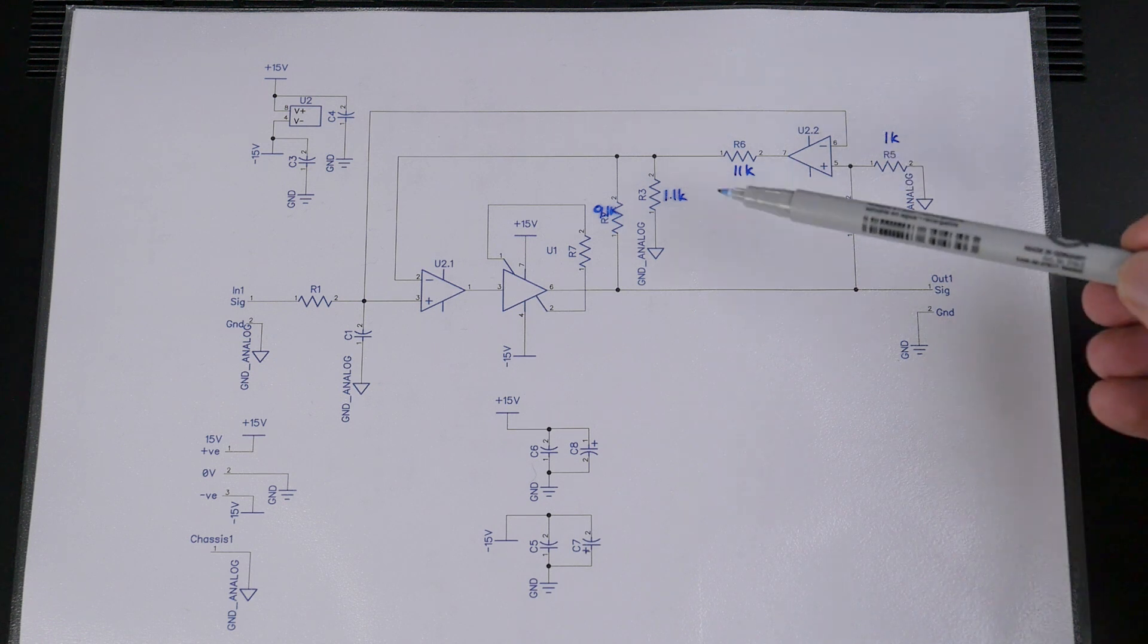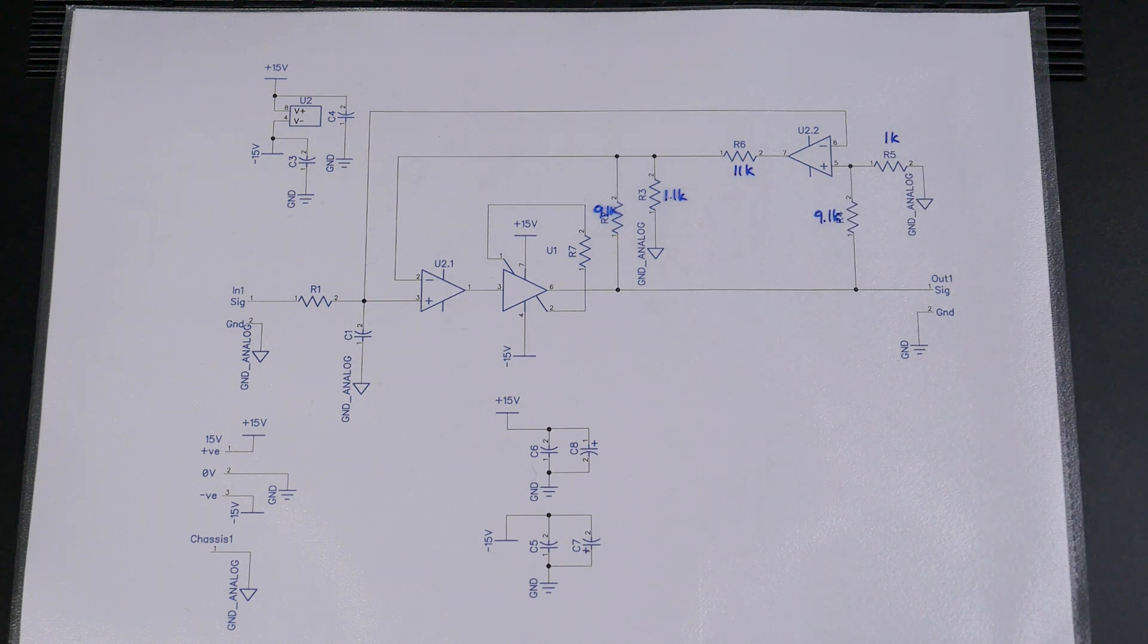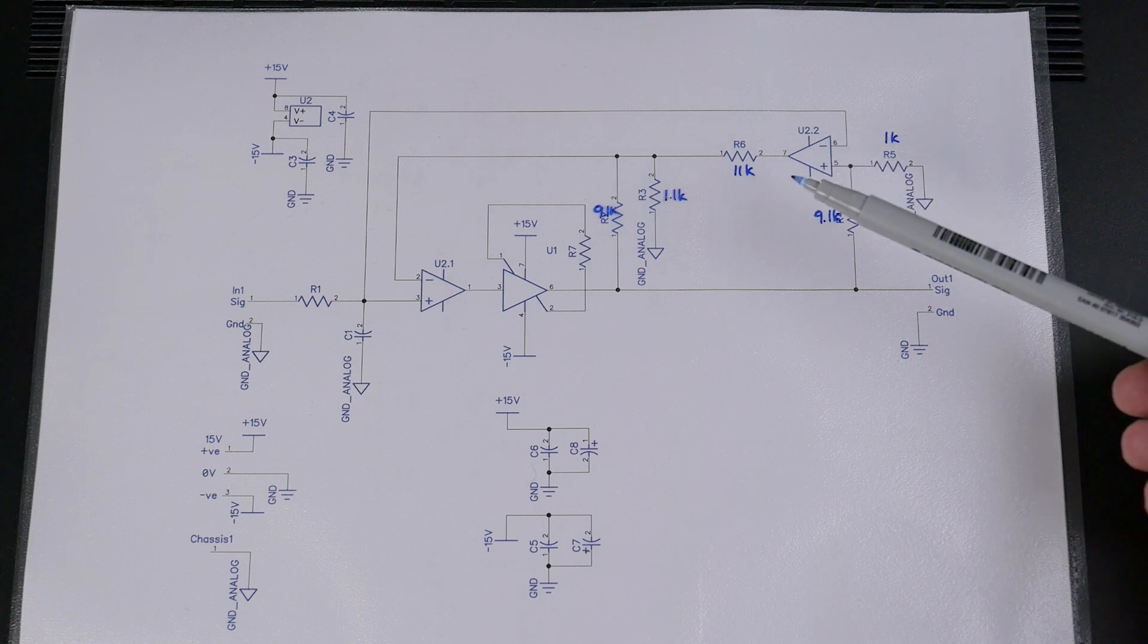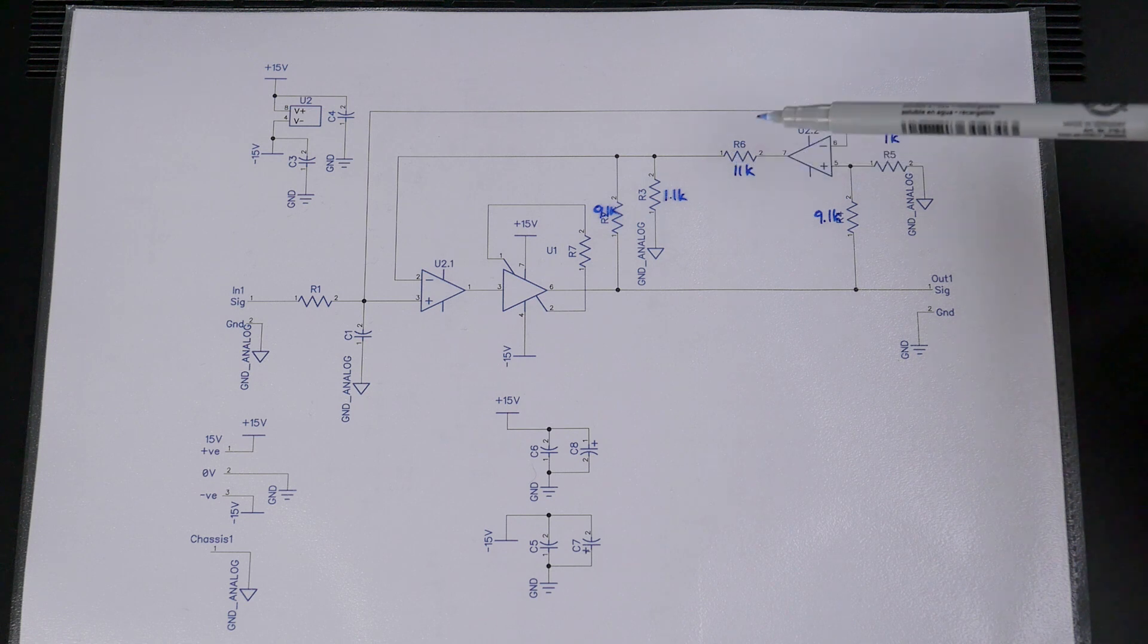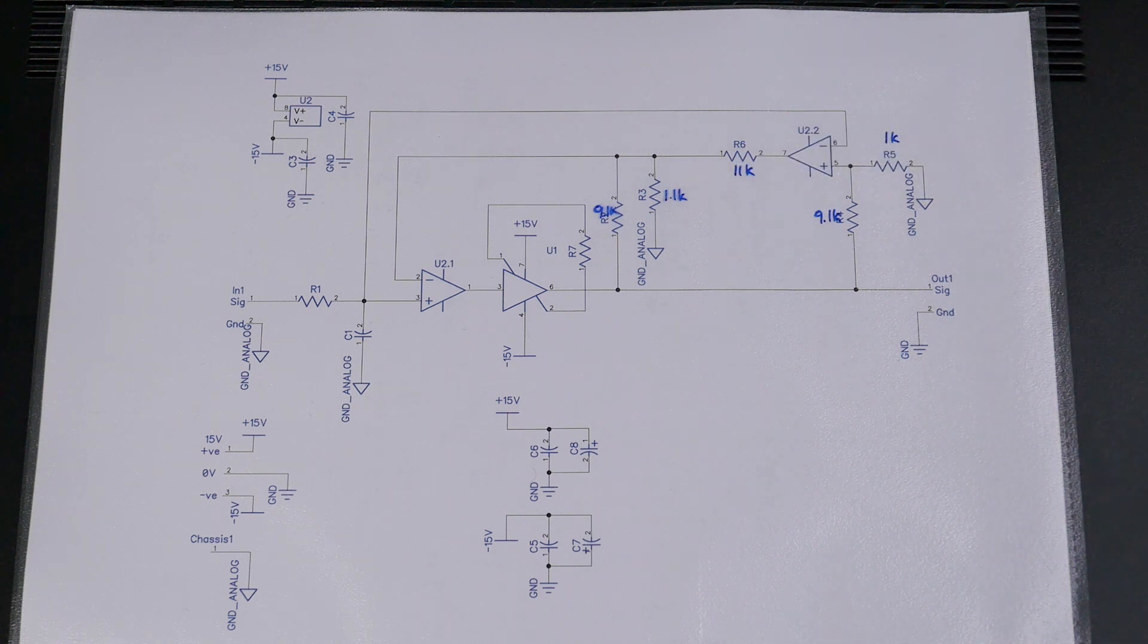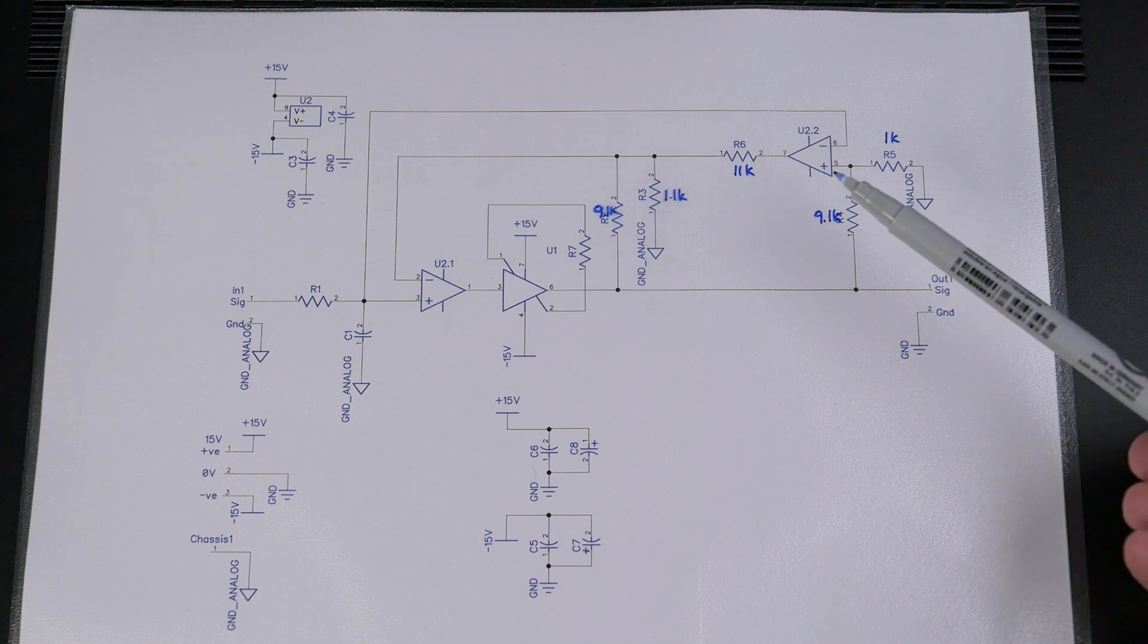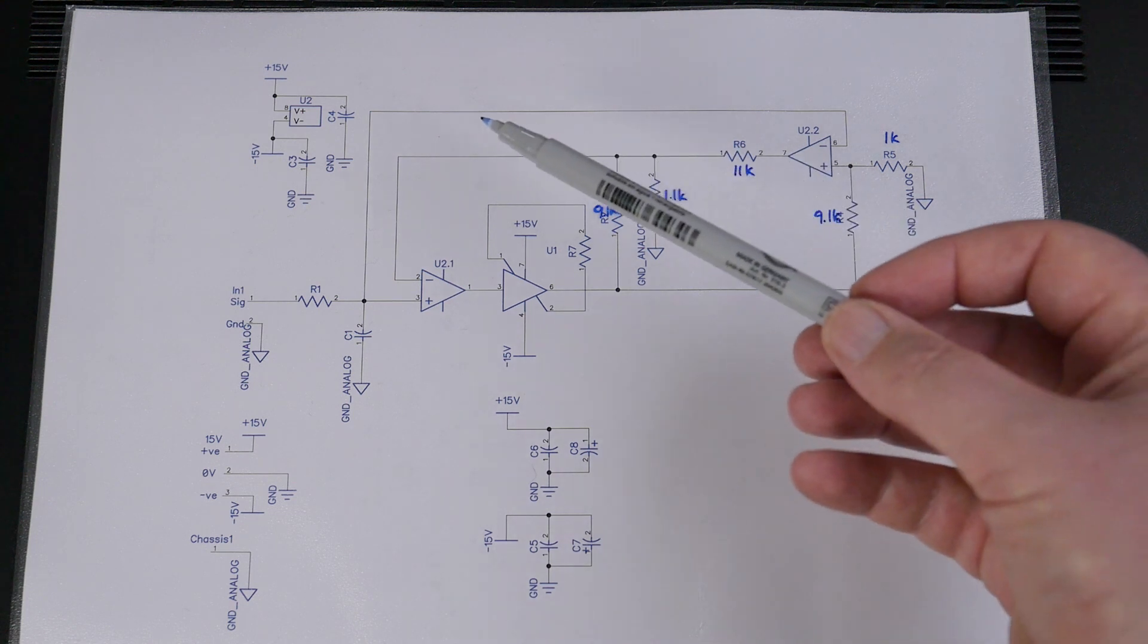Now if we had something here set up as a unity gain instrumentation amplifier we'd have an error signal that we could use in some sort of feed-forward arrangement which we could sum to the voltage output, we could do that with it. Here we've gone with negative feedback so it's still negative feedback but it's negative feedback of an error signal only.